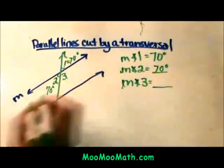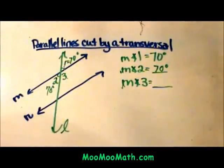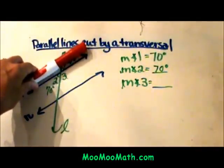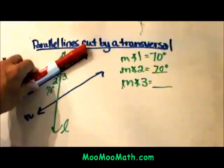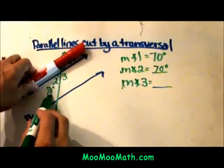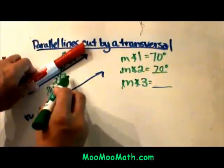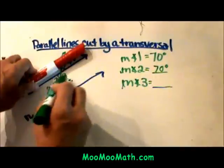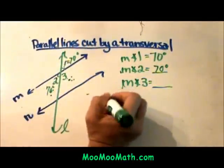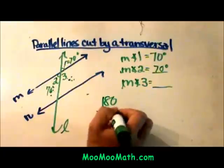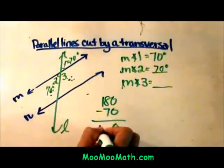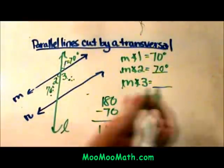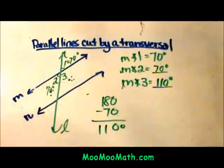Now let's look at Angle 3. Angle 3 is a linear pair with Angle 2. We know that lines add up to 180, so if this angle is 70, Angle 3 has to be its supplement. It is supplementary, so I'm going to take 180 and subtract 70 to get 110 degrees. This angle is 110 degrees.